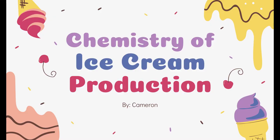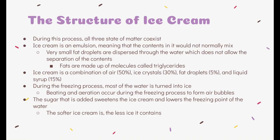The chemistry of ice cream production. During this process, all three states of matter coexist. Ice cream is an emulsion, meaning that the contents in it would not normally mix. Very small fat droplets are dispersed through the water, which do not allow the separation of the contents.